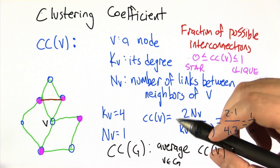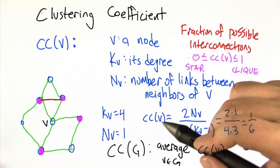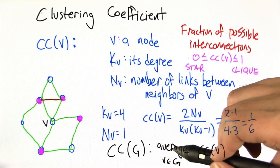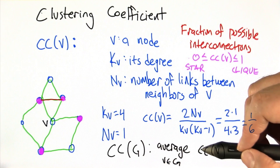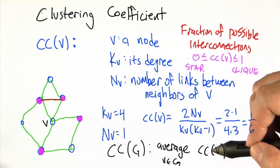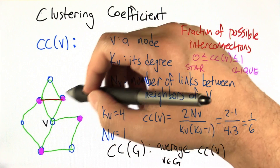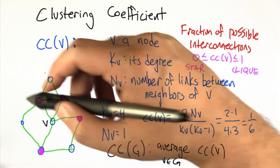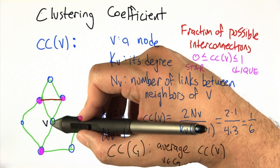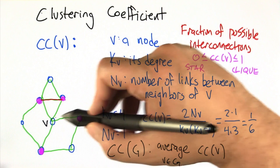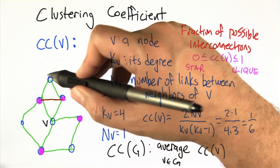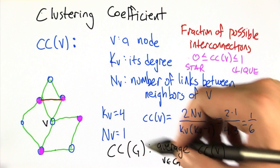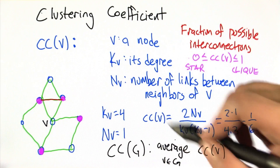We're going to say that the clustering coefficient for a graph is just the average of the clustering coefficients of the nodes in the graph. So if we wanted to compute the clustering coefficient of this graph, we'd actually have to go through node by node, compute the clustering coefficient for each one, and then average them.